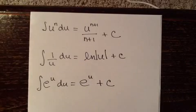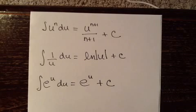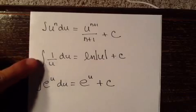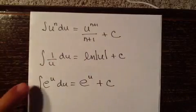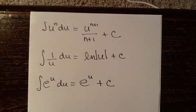So these are our three main integration formats. We'll be picking one of these three: the power rule, the one over u that yields a natural log, or the e to the u rule. So let's go ahead and pick up on number six.